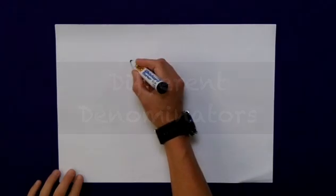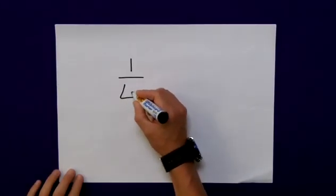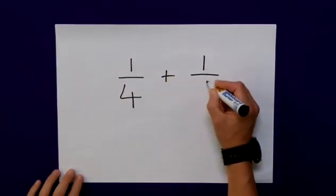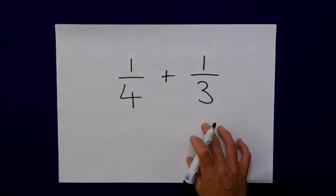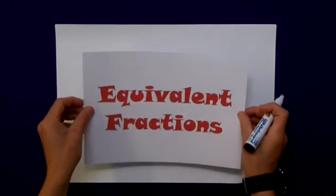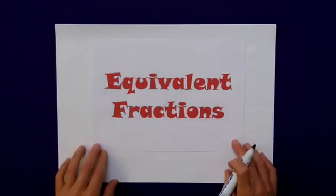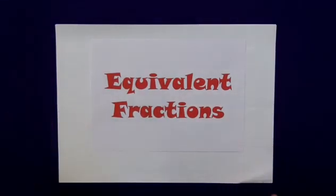Now, the real sticking point comes when the denominators are different. 1 quarter plus 1 third can't be done in the same way. Now, before I go into the method for this, I would advise that you have a quick look at my clip on equivalent fractions because that will help.